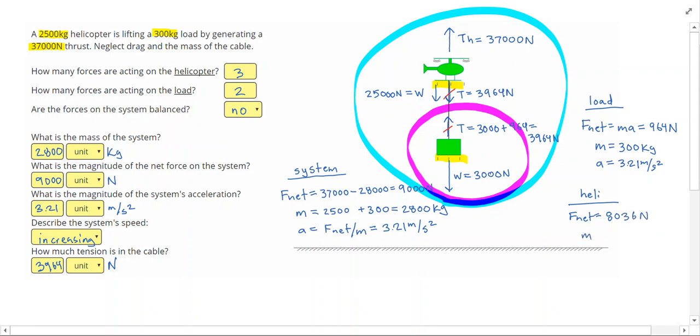The mass of the helicopter just by itself is 2,500 kilograms. And we already know the acceleration of the helicopter is 3.21 meters per second squared. So you'll notice I found all three of these things without actually using Newton's second law. Now I can just double check,